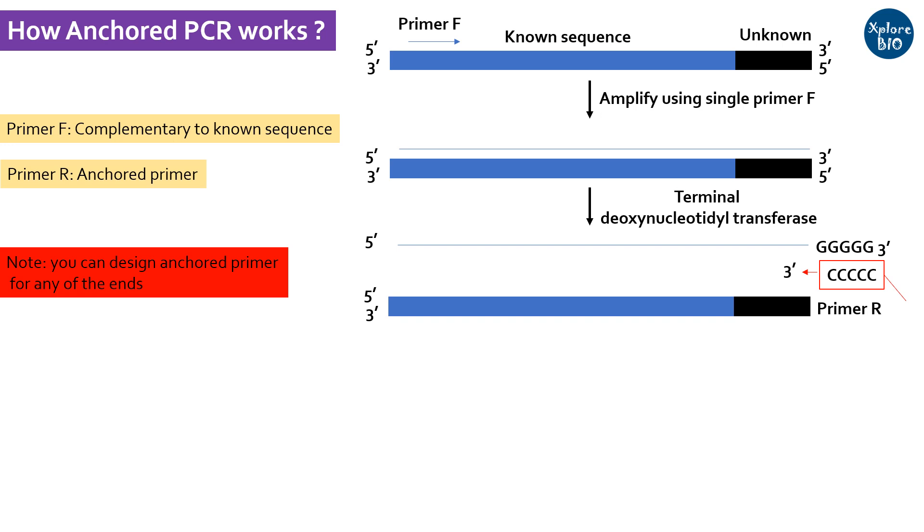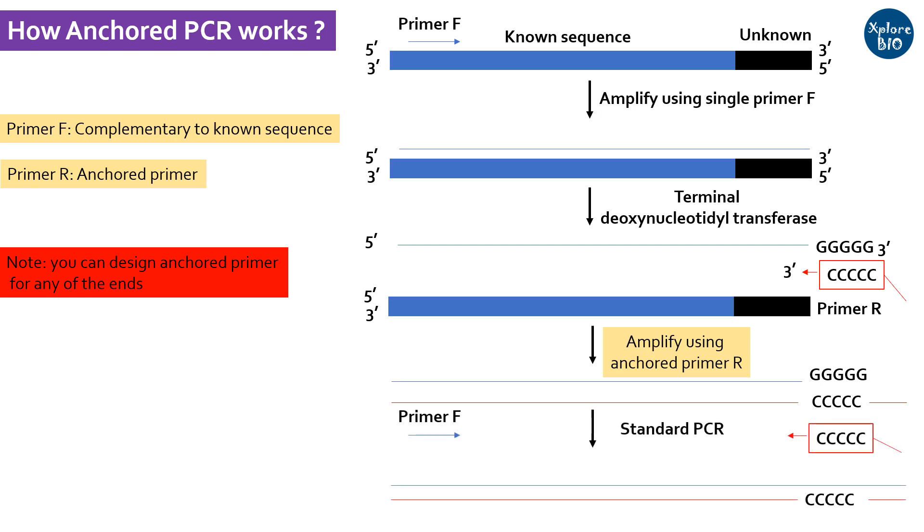Now you perform single-strand DNA amplification using this anchored primer. In the next round, you can perform normal PCR using both the primers to generate multiple copies of DNA of interest.